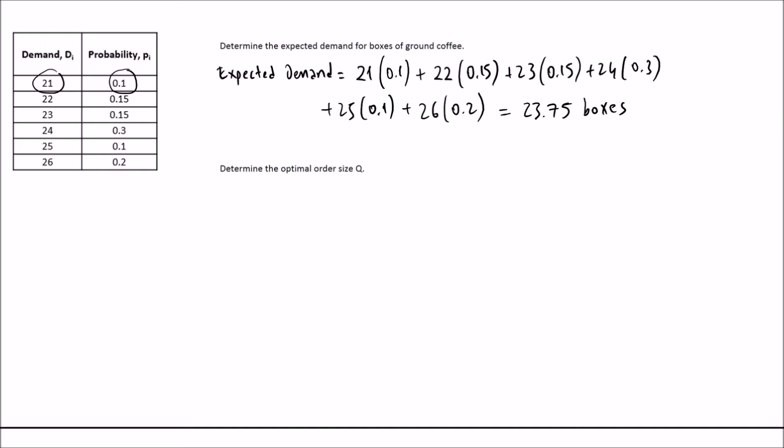The next question is to determine the optimal order size. The critical factor formula is CV = CU / (CU + CO), where CU is the underage cost and CO is the overage cost. The formula for CU is P minus C, and CO is C minus S, where P is the selling price, C is the purchasing or production cost, and S is the salvage value.